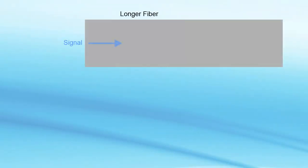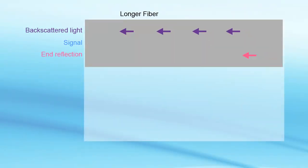As the length of the fiber increases, the amount of total backscattered light by the fiber also increases, and the fiber end reflection decreases.